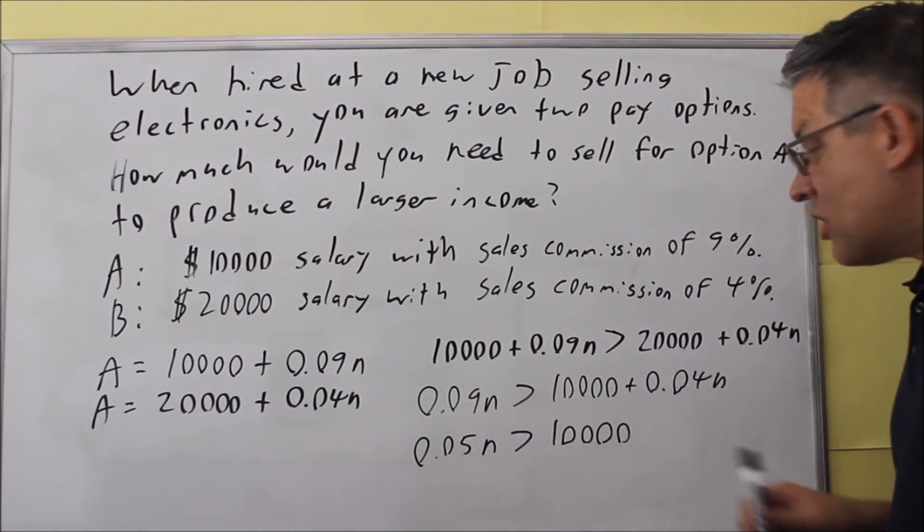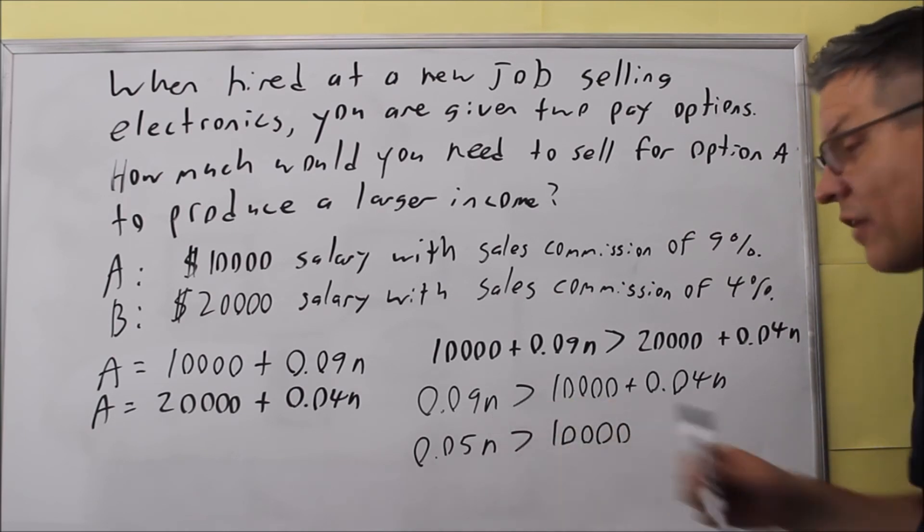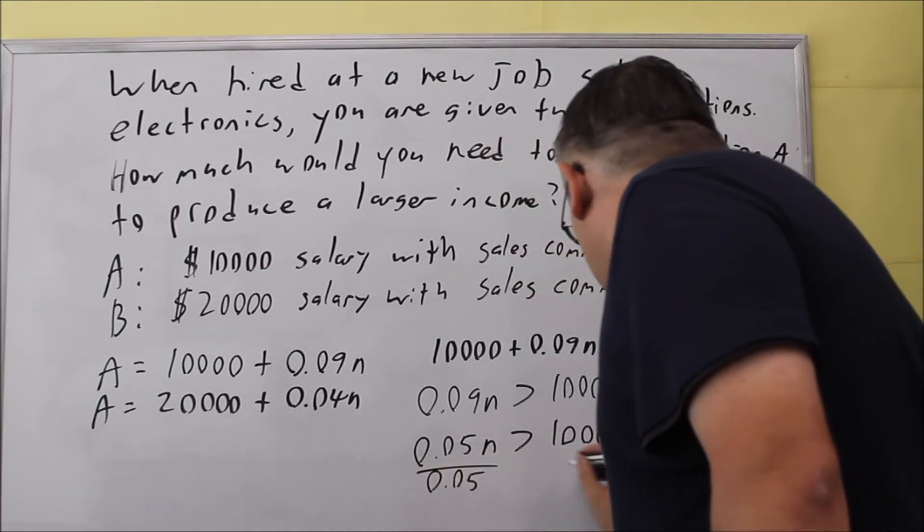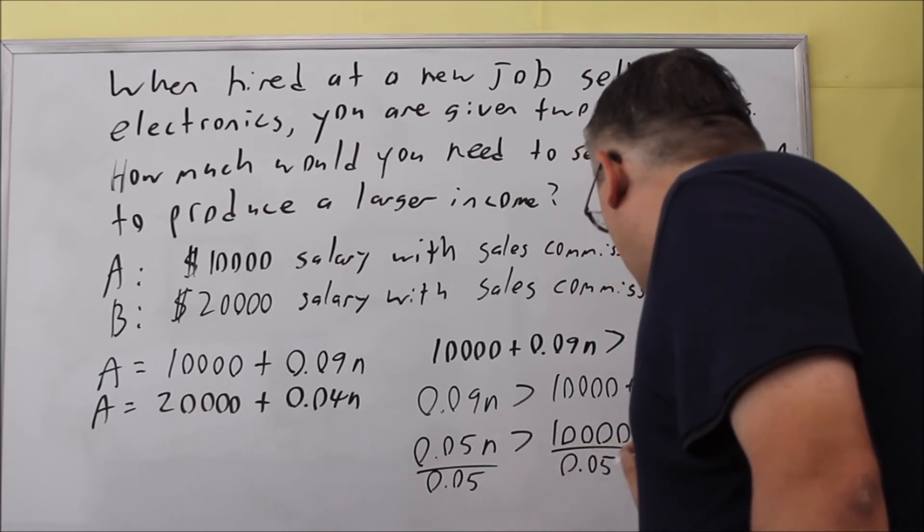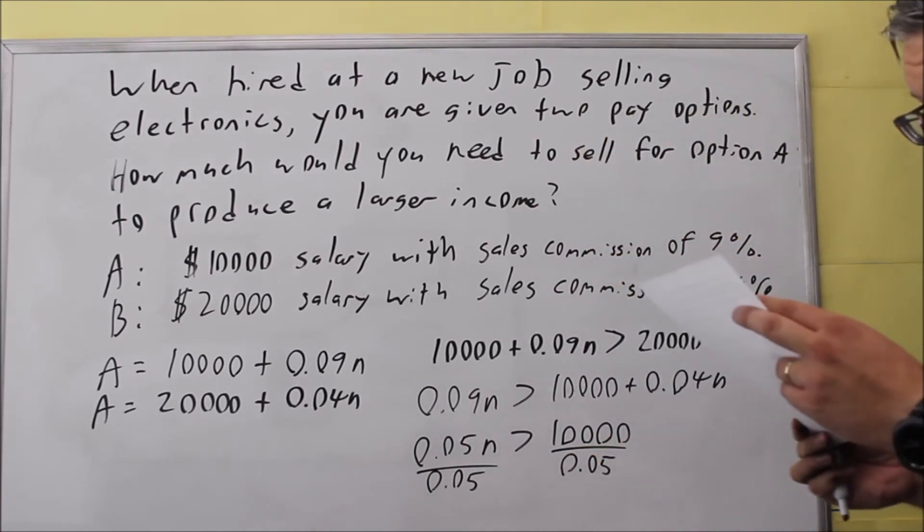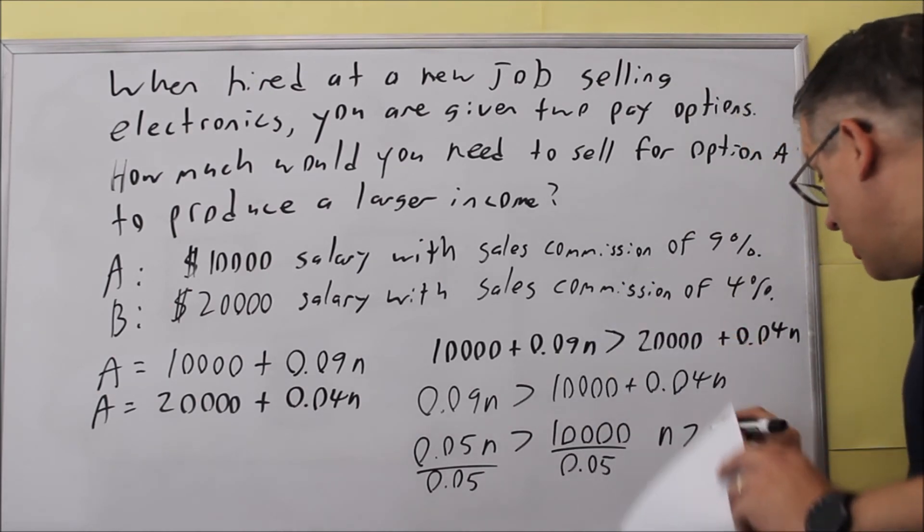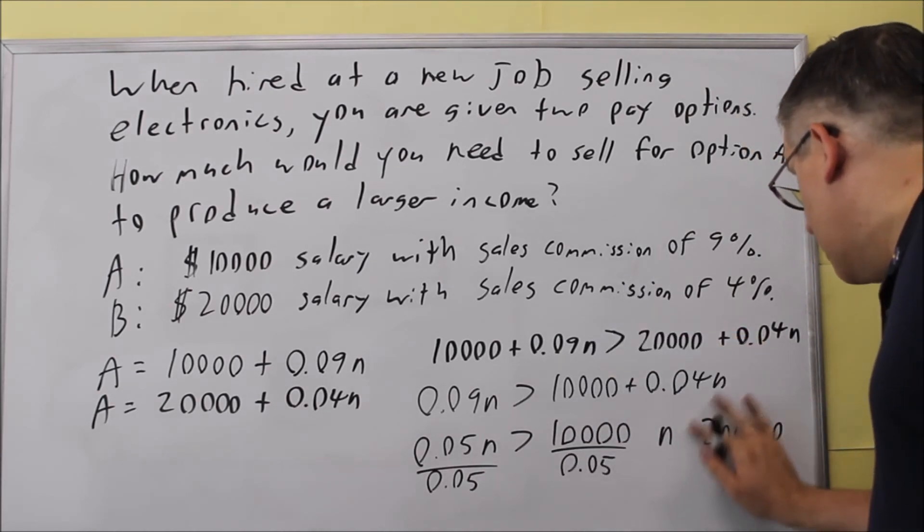Next we need to divide both sides by 0.05 because we have to solve for n. Divide both of these by 0.05. Once we do that, we end up that n has to be more than 200,000.